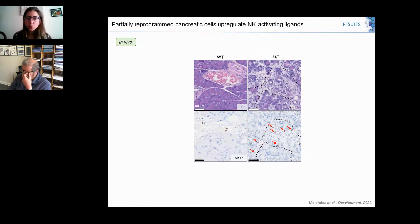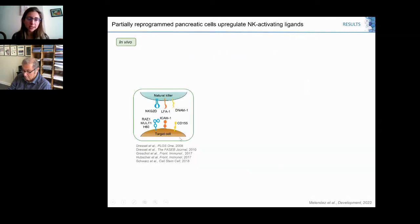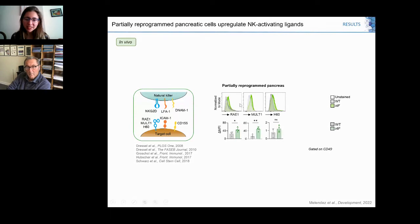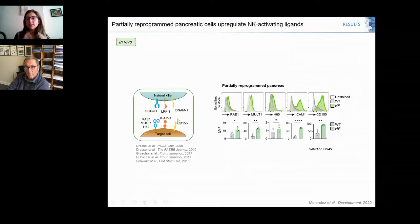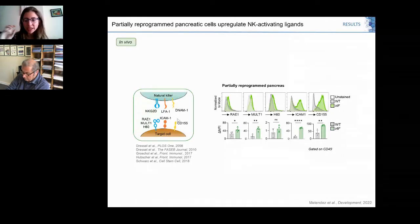To understand whether cells undergoing reprogramming were expressing ligands that can activate NK cells, we checked for expression of specific markers previously described as important in recognition of pluripotent cells by NK cells. By FACS we saw significant upregulation of RAE1 and MULT1, which are NKG2D ligands, in our partial reprogrammed pancreas. We also observed a significant population of ICAM1, an activating ligand of natural killer cells, and CD155, meaning these cells undergoing reprogramming were probably activating NK cells. We also observed that NK cells infiltrating the pancreas were being activated and degranulating.